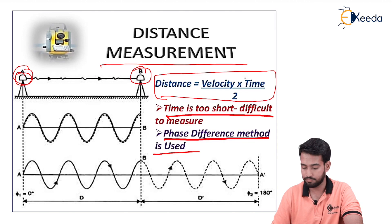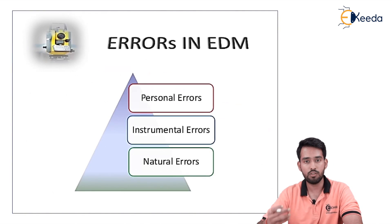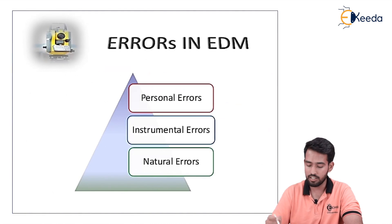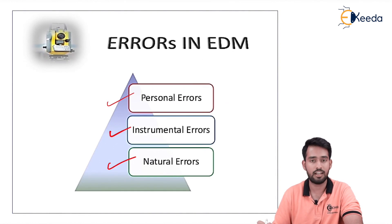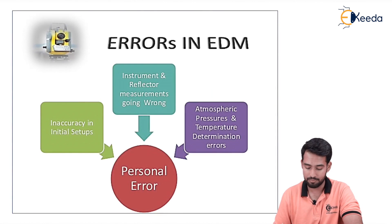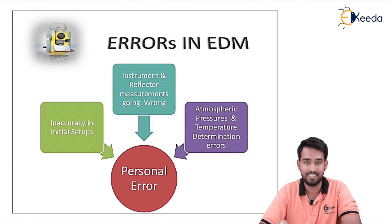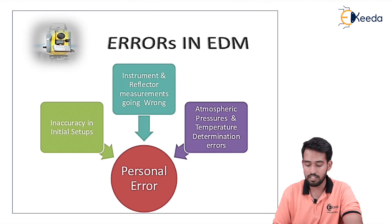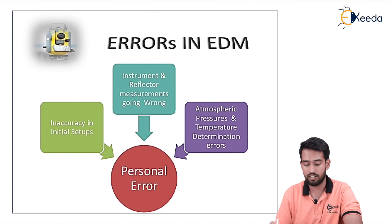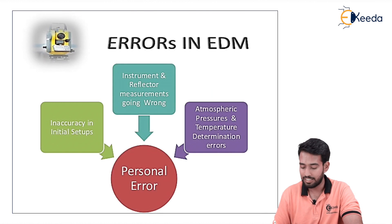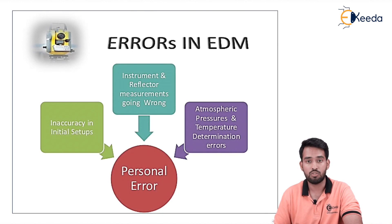Now we'll look at errors in EDM measurement. There are three types: personal errors, instrumental errors, and natural errors. Personal errors include: inaccuracy in initial setup — if the instrument is not properly leveled or centered there will be an error; incorrect instrument and reflector placement — if they are not properly set at the measurement point; and atmospheric pressure and temperature determination errors — if atmospheric pressure and temperature are not calculated accurately, there will be correction errors.